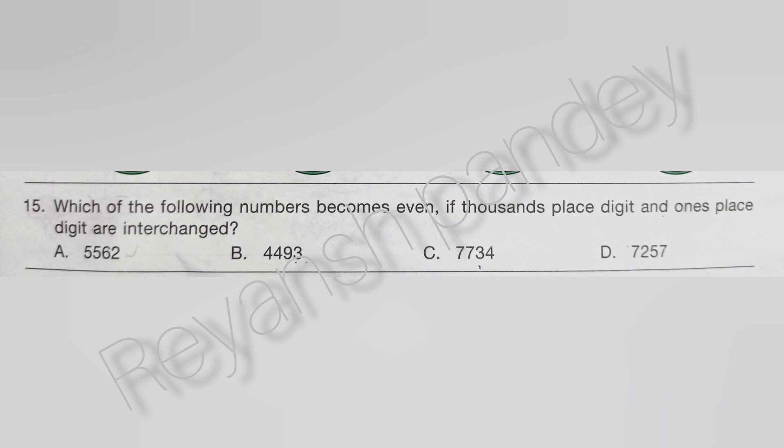Which of the following numbers becomes even if the 1000s place digit and the 1s place digit are interchanged? The answer is B.